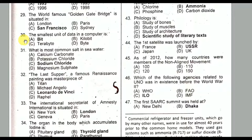Question number thirty-two: The last opera — the famous Renaissance painting — was Leonardo da Vinci's masterpiece. These are previous paper MCQs we have already discussed. Question number thirty-three: The international secretariat of Amnesty International is situated in London. Option B is the correct option.